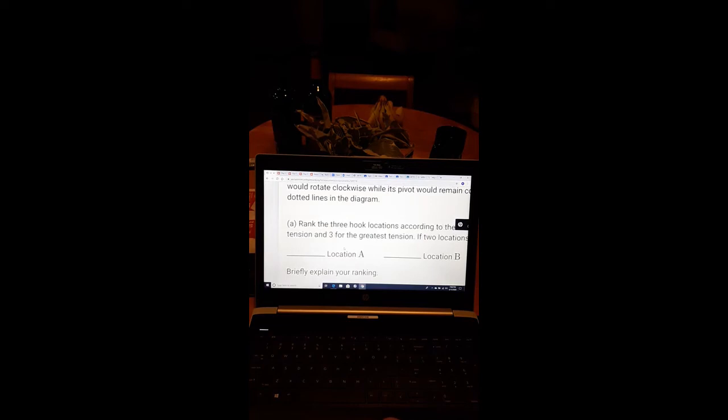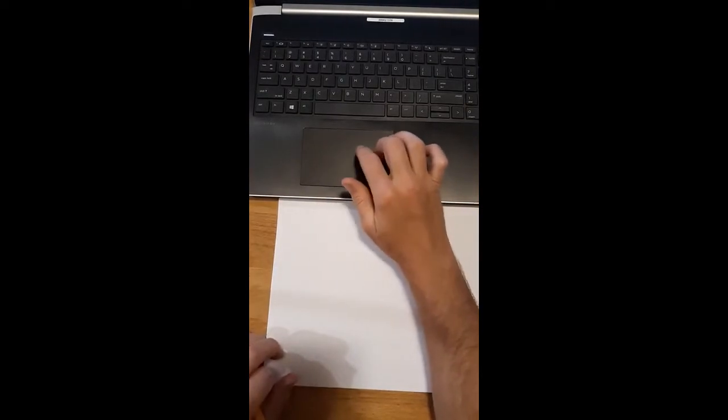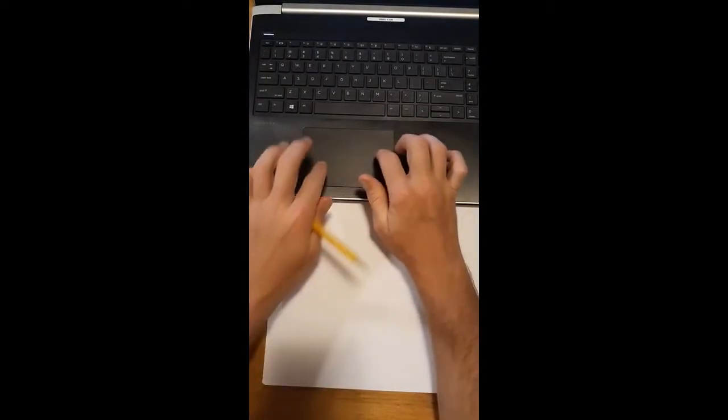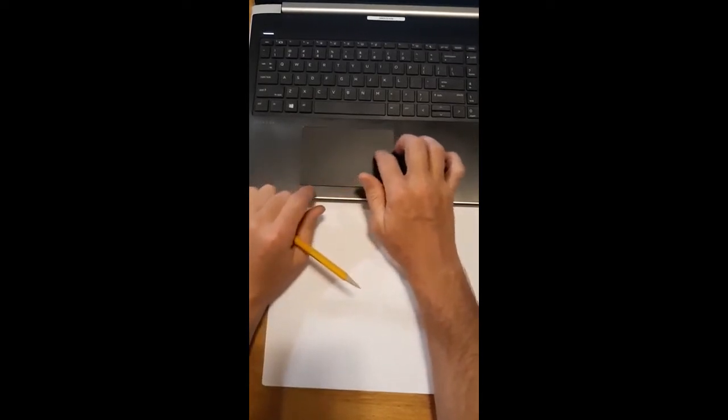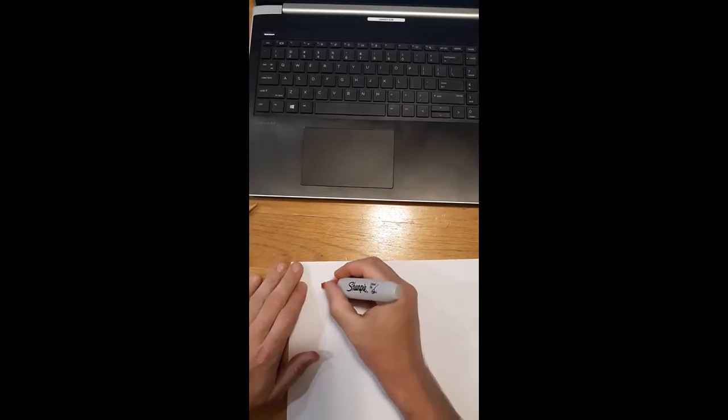The first part, part A, asks us to rank the three hook locations according to the amount of tension the support cable would experience if the students decide to support the sign from that location. Use one for the least tension and three for the greatest tension. If two locations would have the same tension, give them the same ranking. A is the one that's closest to the wall, C is furthest from the wall.